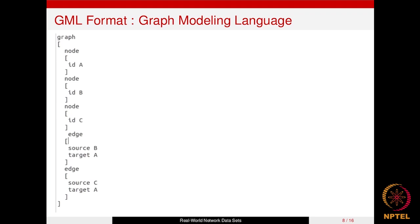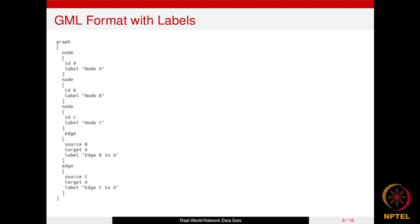To add labels to nodes and edges in GML format, you go inside the node keyword and write the label keyword followed by the label value, such as 'node A' or 'node B'. You do this individually for all nodes. Similarly, for edges, you use the label keyword and write the label for that edge.